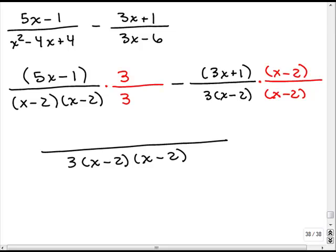And, we need to simplify each of the numerators and subtract. Okay. So, for the first one, I've got to do 5x minus 1 times 3. So, we're going to have to use the distributive property here with a 3. So, that's going to give me 15x minus 3.